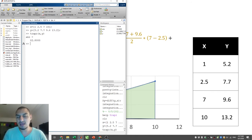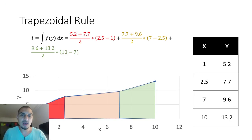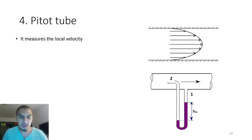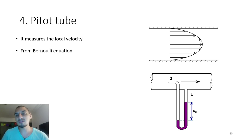I want to get you interested in this because we have applications in chemical engineering. A famous example is the Pitot tube — a tool used to calculate fluid velocity in tubes or pipes. You have a tube connected to a pressure-measuring device like a manometer, and using the Bernoulli equation and the pressure difference, you can calculate the stream velocity. The Pitot tube is famous for calculating local velocity.